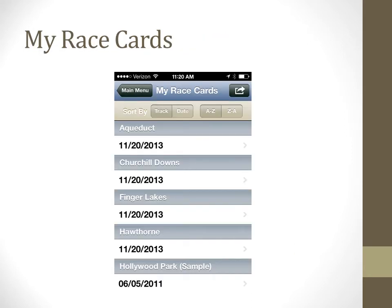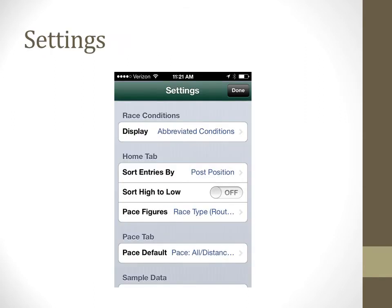If you want to switch race cards or come back to the program and want to view a card you have previously downloaded, you want to choose My Race Cards. They can be sorted by track or date and also alphabetically. Settings allows you to customize the way the data is displayed and choose the initial views that best suit your needs.